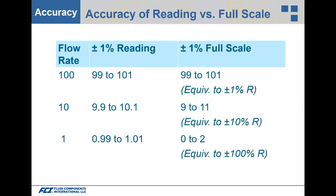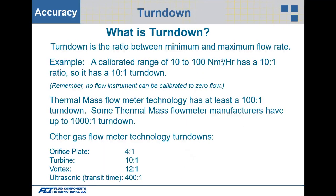The turndown is the ratio between the maximum and minimum flow rate — a flow range of 10 to 100 normal cubic meters per hour has a 10-to-1 turndown. Thermal mass flow meter technology has at least 100-to-1 turndown; some manufacturers go up to 1000-to-1. For comparison, an orifice plate typically has 4-to-1, a turbine meter is 10-to-1, a vortex is 12-to-1, and ultrasonic goes up to 400-to-1.